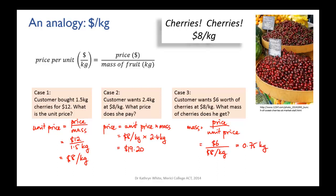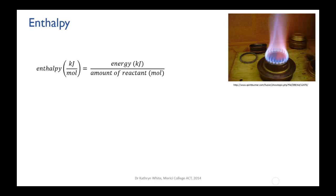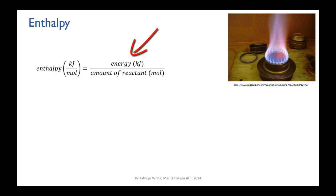Back to enthalpy. A directly analogous relationship applies: the enthalpy of a reaction is like a unit price — it tells you how much energy is released or absorbed per mole of reactant. The relationship is: enthalpy in kilojoules per mole equals the energy released or absorbed in kilojoules divided by the amount of reactant in moles.